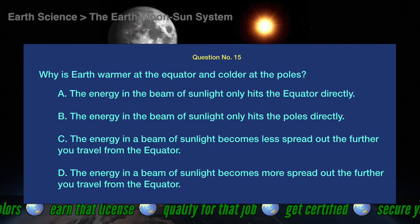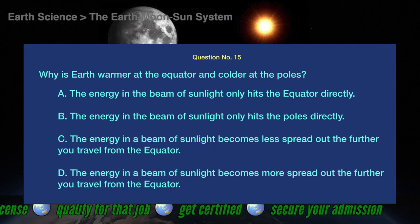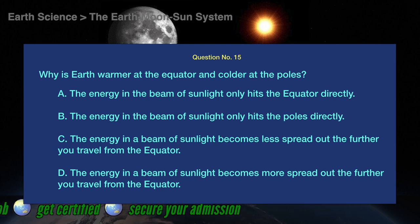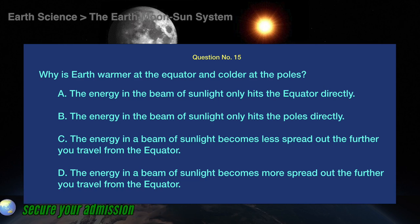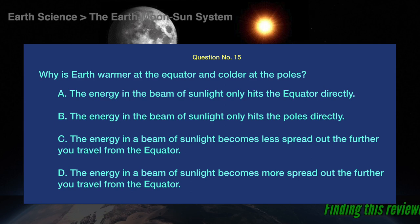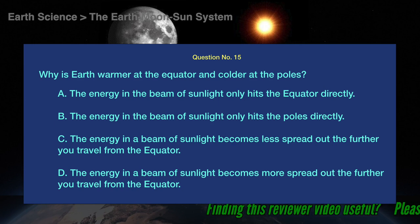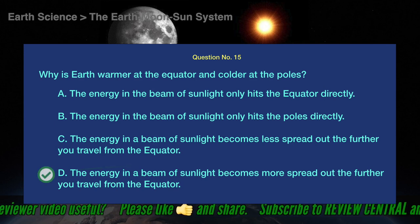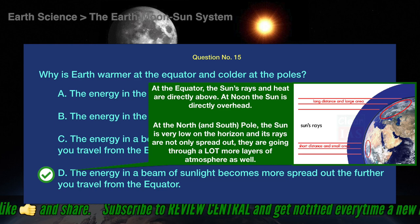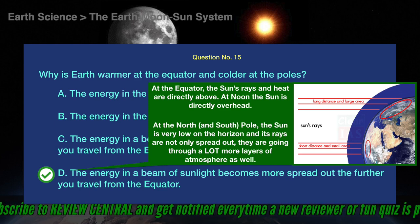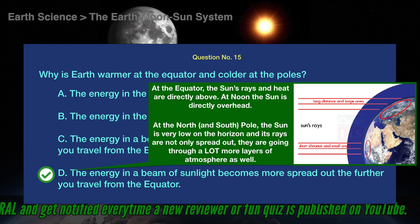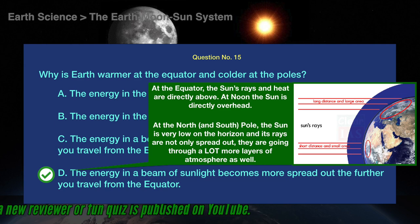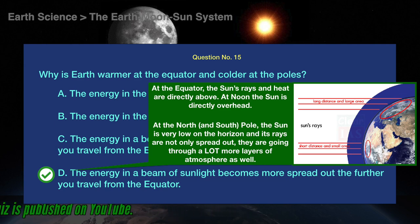Question number 15. Why is Earth warmer at the equator and colder at the poles? The correct answer is D. The energy in a beam of sunlight becomes more spread out the further you travel from the equator. At the equator, the sun's rays and heat are directly above — at noon the sun is directly overhead. At the north and south poles, the sun is very low on the horizon and its rays are not only spread out, they are also going through many more layers of atmosphere.